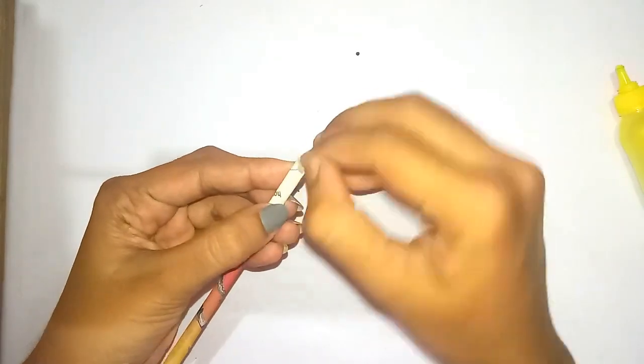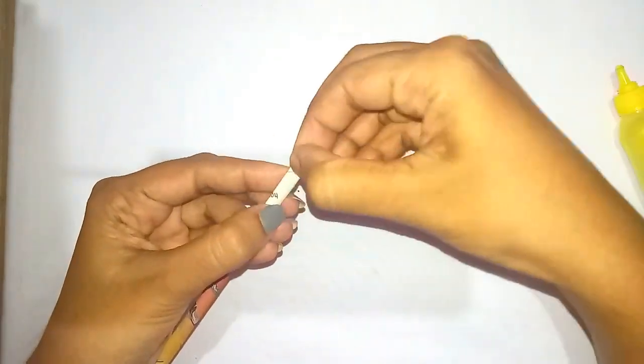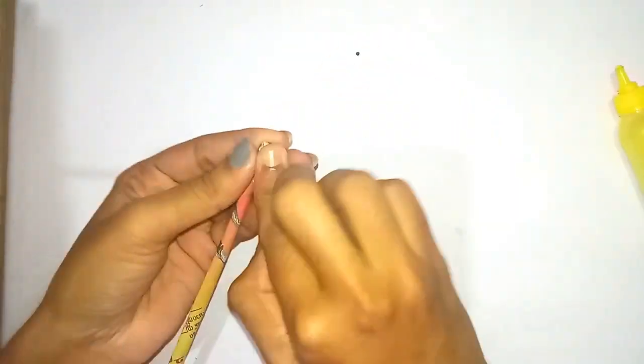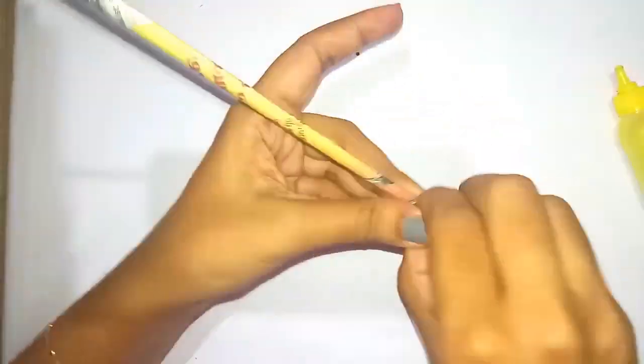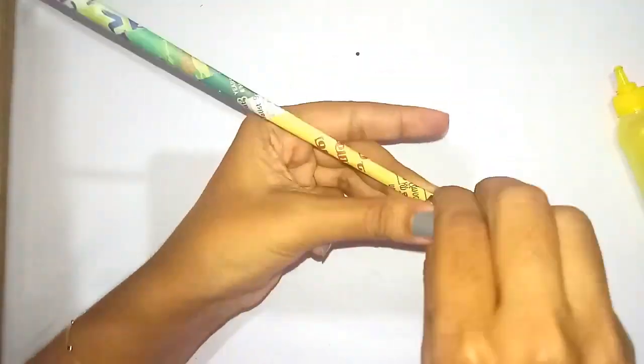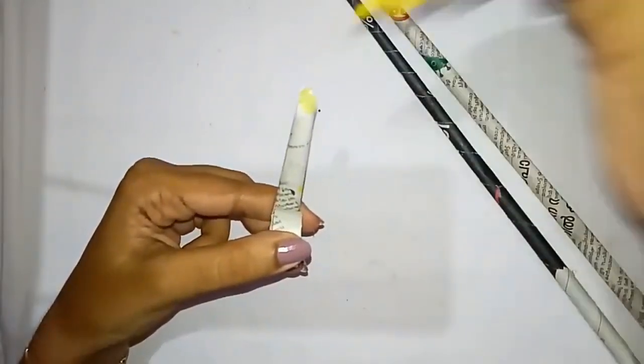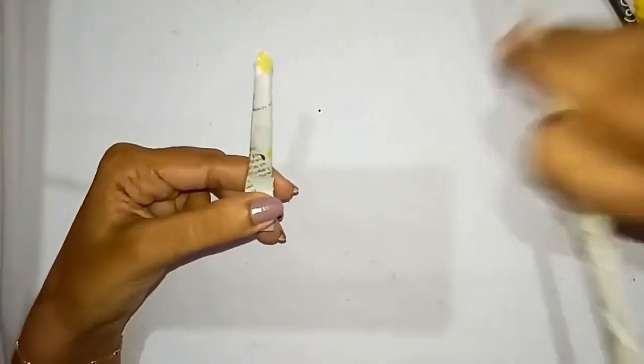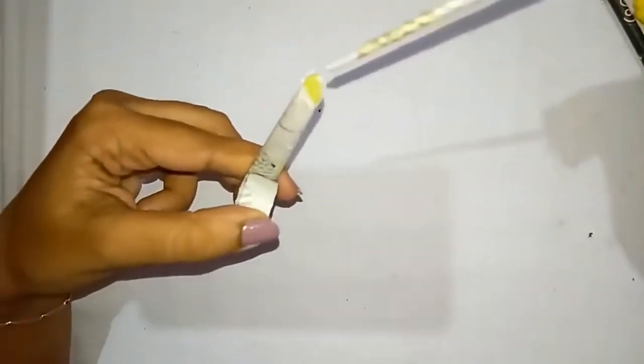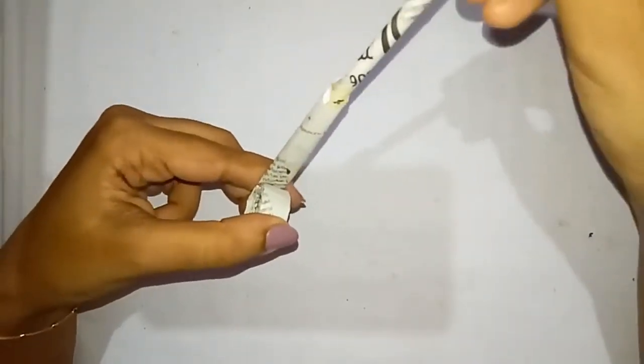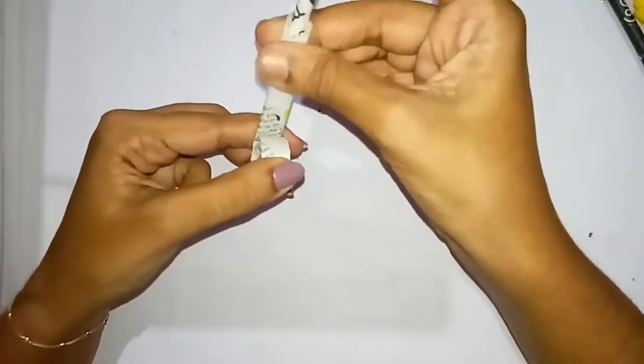Stick it together and start rolling the paper. When you are about to reach the end of the paper tube, apply some glue inside and insert another new paper tube. Stick it together and start rolling the paper again.